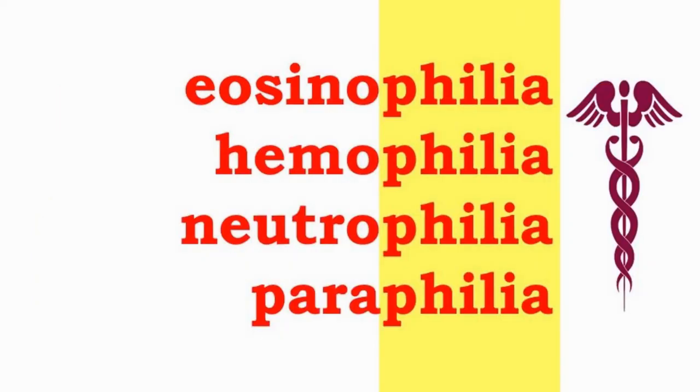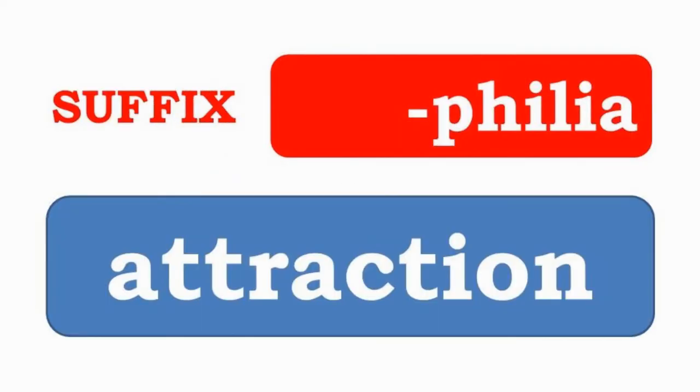Eosinophilia, hemophilia, neutrophilia, and paraphilia have the suffix -philia, which indicates an attraction for.